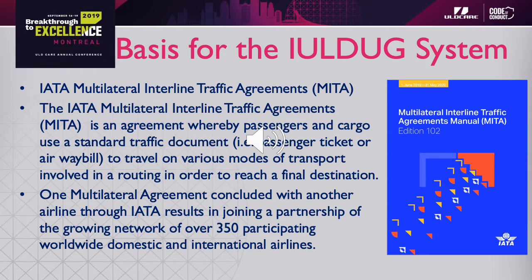Let's start by looking at the basis for the IULD UG system — why do we have it in the first place? Well, it all rests on the IATA Multilateral Interline Traffic Agreements, or META. This is an agreement where passengers and cargo can move from one airline to another smoothly with standardized documentation and standardized practices. This can be done 24/7 wherever it happens around the world. IATA has this Multilateral Interline Traffic Agreement with over 350 participating members.